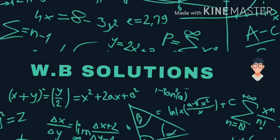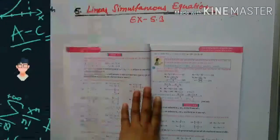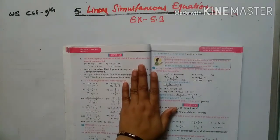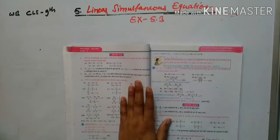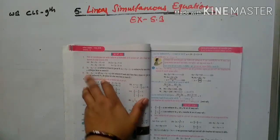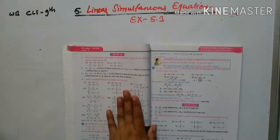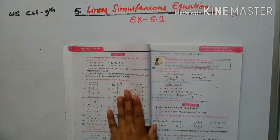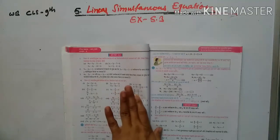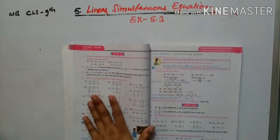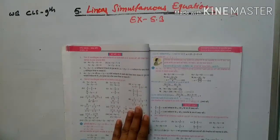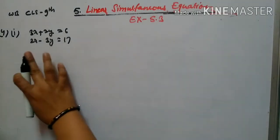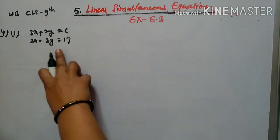Hello students, welcome to the channel WB Solutions. We are continuing Exercise 5.3, which is based on the elimination method of solving linear equations. We are going to start question number 4, as we have already completed three questions. Question number 4 is: 3x + 2y = 6 and 2x - 3y = 70.